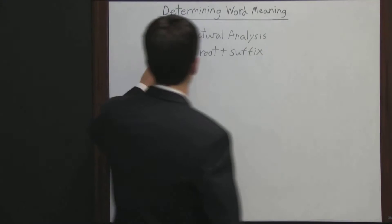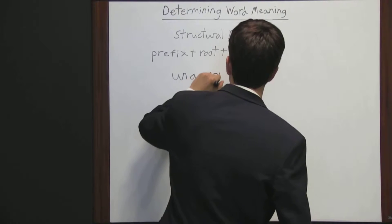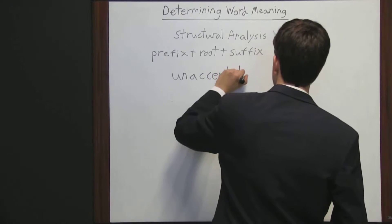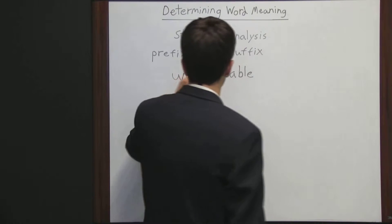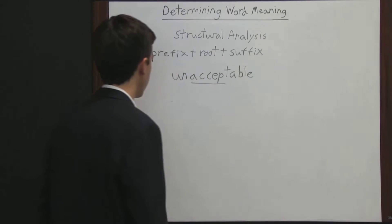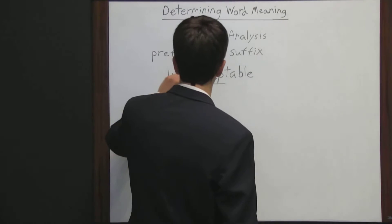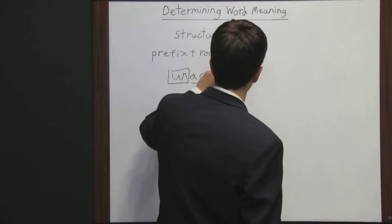So take the word unacceptable, for example. Here you have the root word, accept, because that can be a word in itself. And then here you have the prefix, un, and the suffix, able.